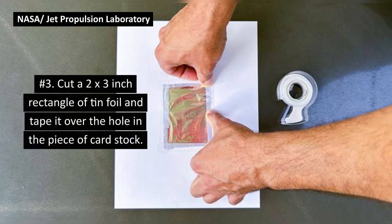Number three, cut a two by three inch rectangle of tinfoil and tape over the hole in the piece of cardstock.